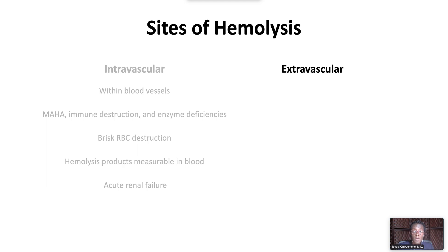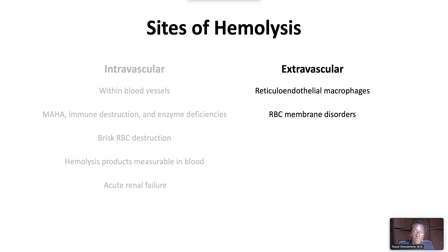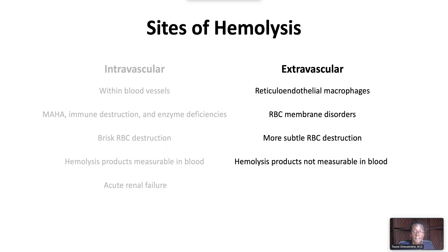Extravascular hemolysis occurs outside the vasculature due to destruction of damaged or complement-coated red blood cells via macrophages of the reticuloendothelial system in the liver, spleen, bone marrow, and lymph nodes. Extravascular hemolysis is typical of membrane disorders such as hereditary spherocytosis. RBC destruction can appear more subtle, especially because hemolysis products are not easily measured in the blood. The chronic hemolysis can lead to splenomegaly.